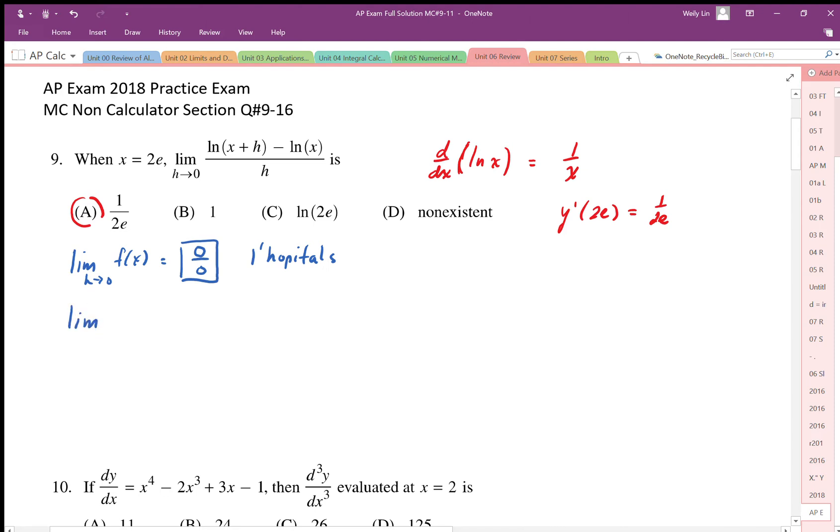So then it looks like this. The limit as h approaches 0 of 1 over x plus h minus, since x is a fixed value, this differentiates to 0. Now, it might be more clear if we just replace that with 2e. That's the same thing. The derivative of the denominator is just 1.